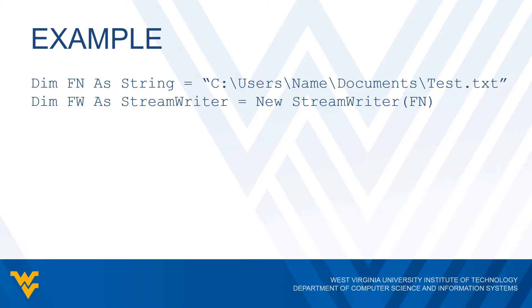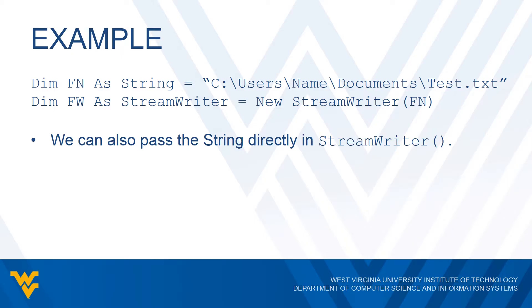Here's some code where the first line creates a string variable that stores the path of the file we want to open — in this case, from the C drive under users, some name folder, then documents, then test.txt. We then write 'Dim fw As StreamWriter' and set that equal to 'New StreamWriter', passing the string variable. We could also pass the string directly into the StreamWriter constructor — either is fine. Also, if your program and file are in the same folder, you only need the file name, not the full path.